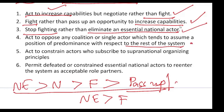Next, act to constrain actors who subscribe to international organizing principles like IGOs or who respect international law — don't encourage this. And finally: permit defeated or constrained essential national actors to re-enter the system as acceptable role partners. For example, one nation is defeated, but again let them re-enter. Through these six rules, balance is to be maintained.